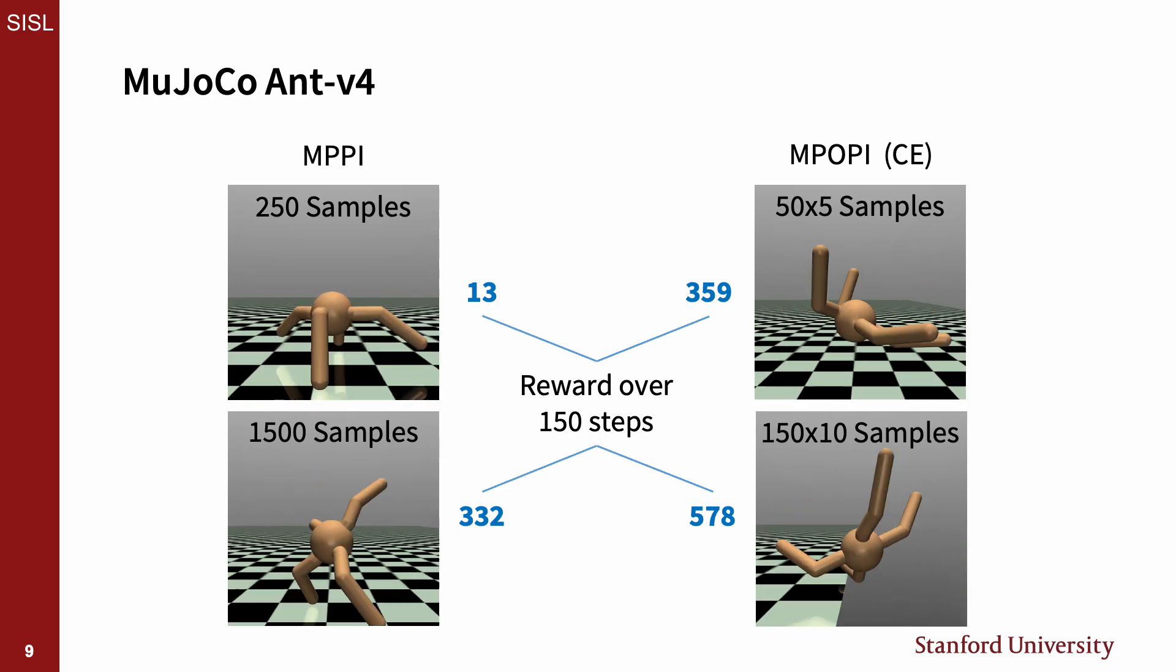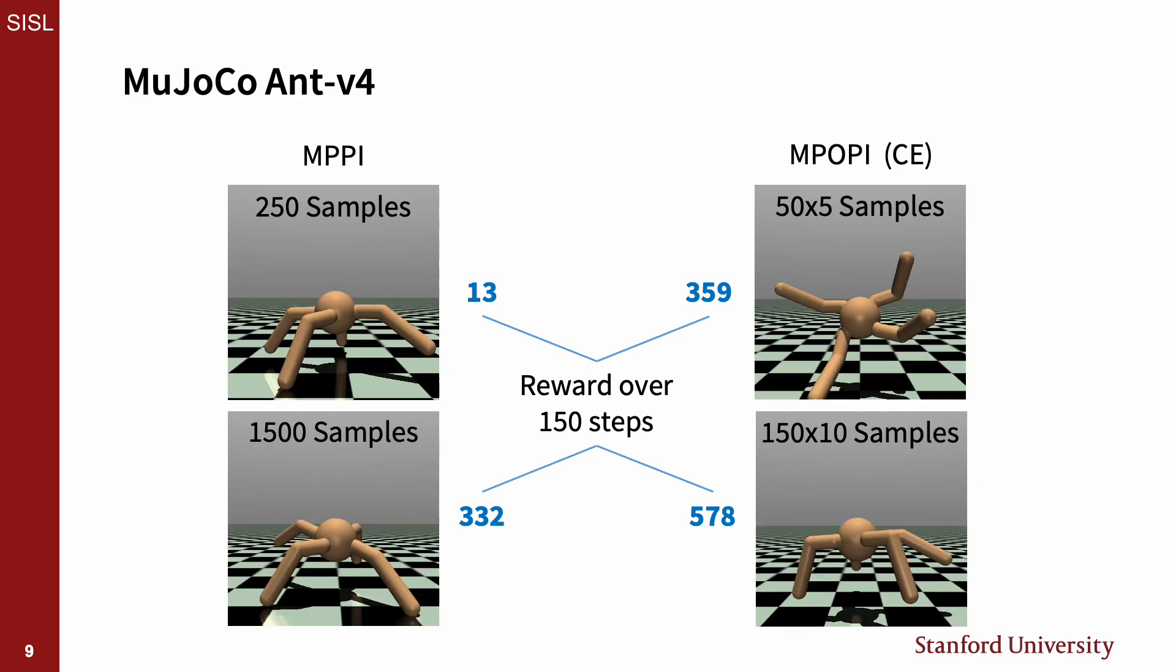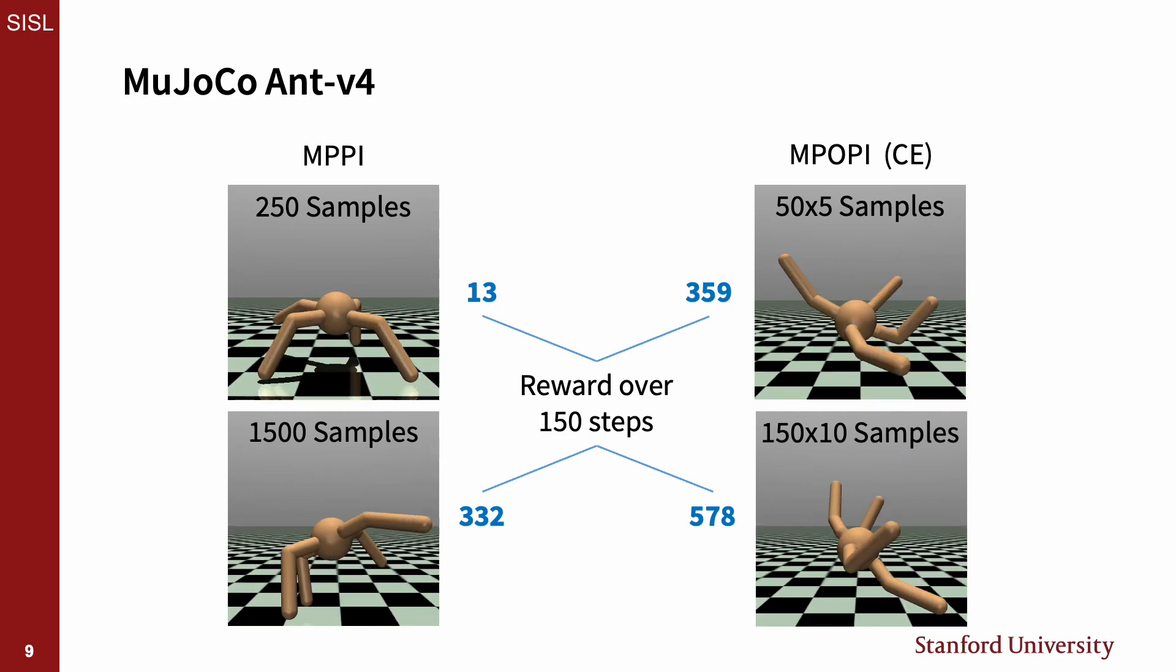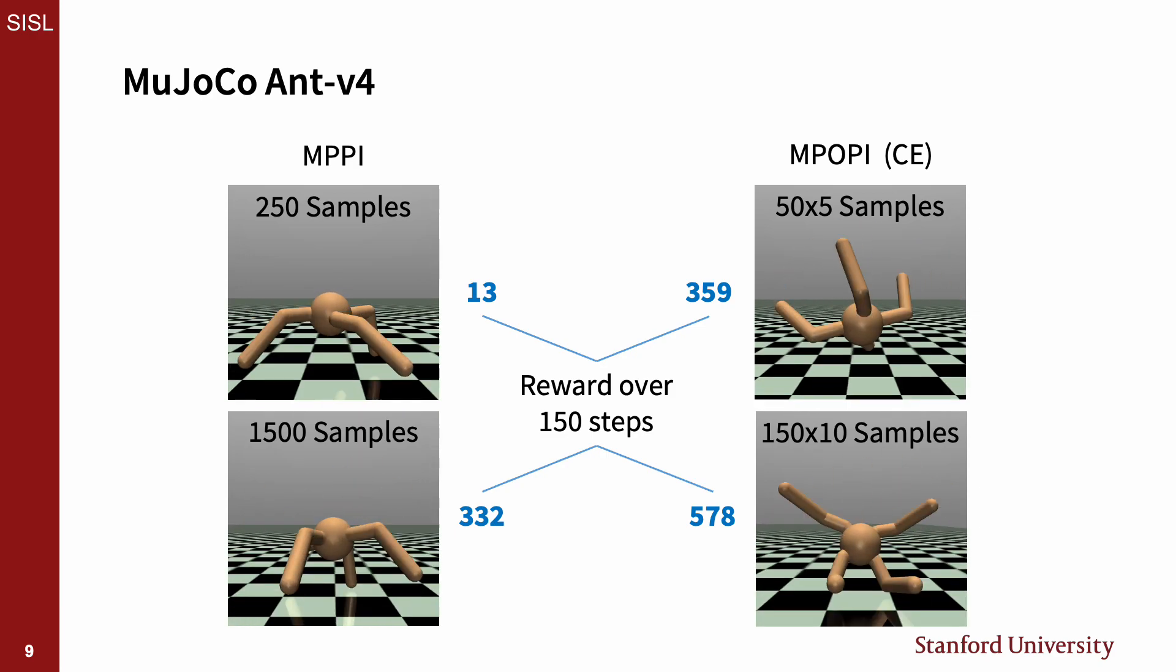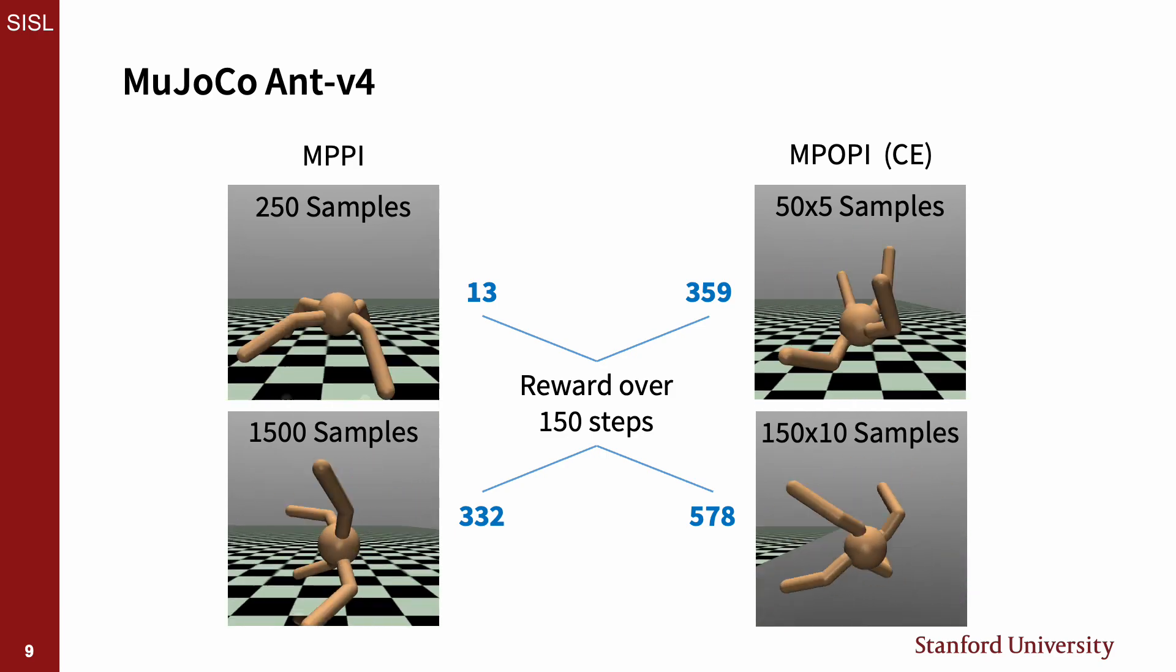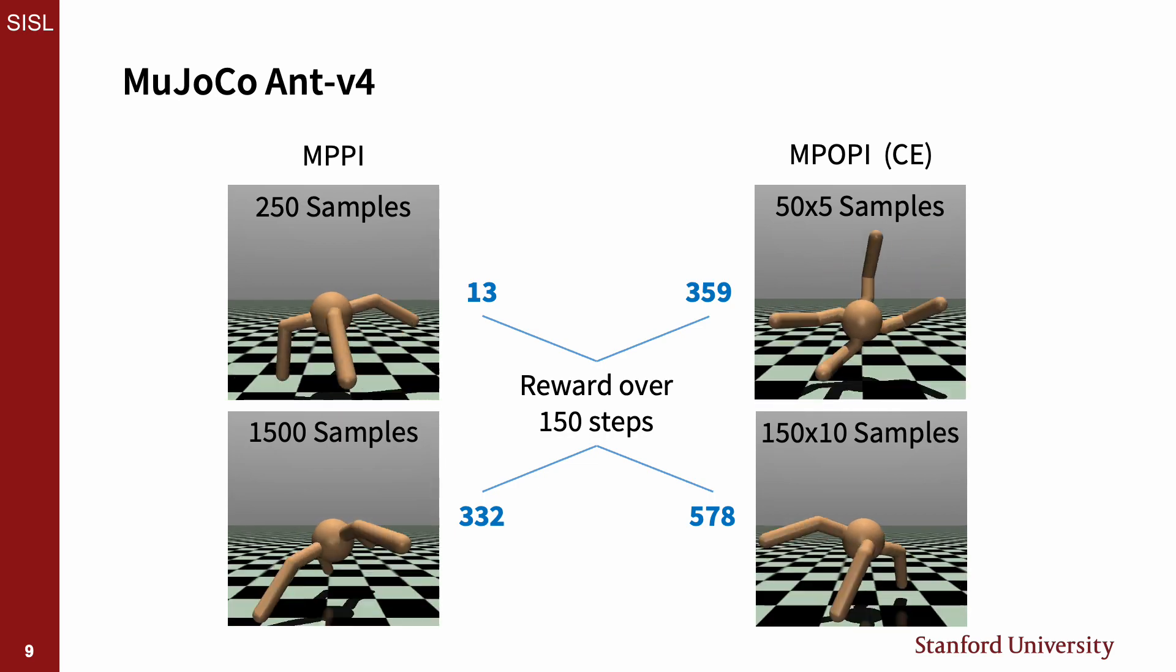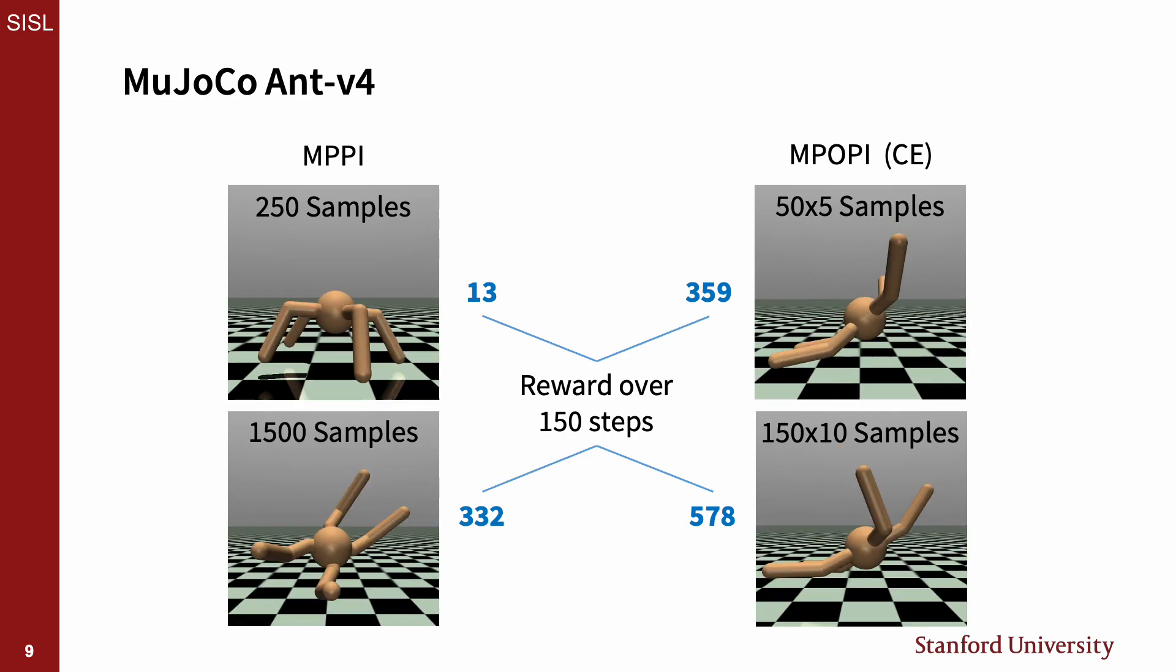This does highlight an attribute of MPPI-like algorithms, though. If certain actions are not desired, like spinning upside down, we can update the cost with no modification to the algorithm as the algorithm is not dependent on the structure of the cost or dynamics functions.